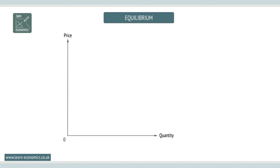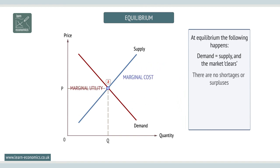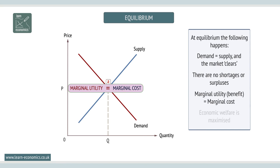Market equilibrium. Economic theory states that there will be a single price at which demand equals supply called equilibrium price. At equilibrium, the market clears. There are no shortages or surpluses. Marginal utility equals marginal cost. Economic welfare is maximized.